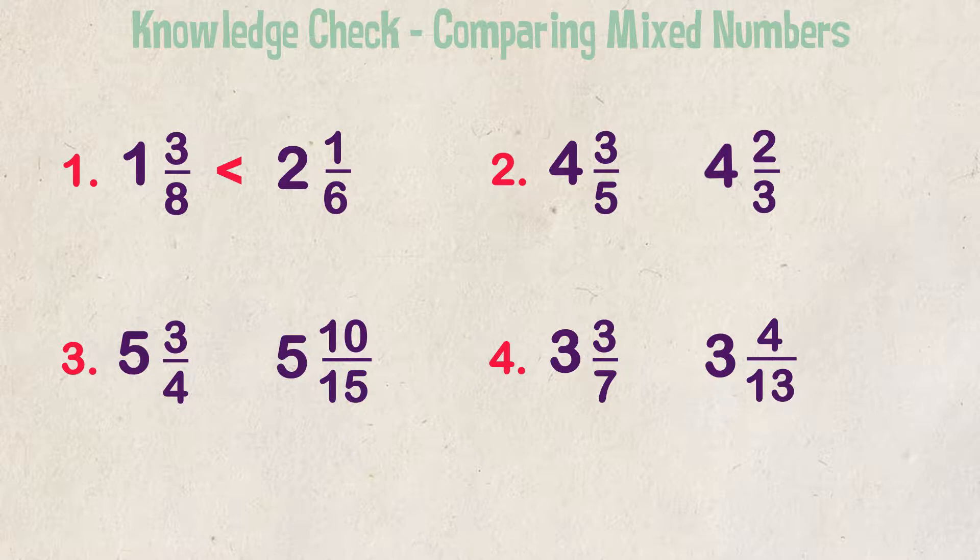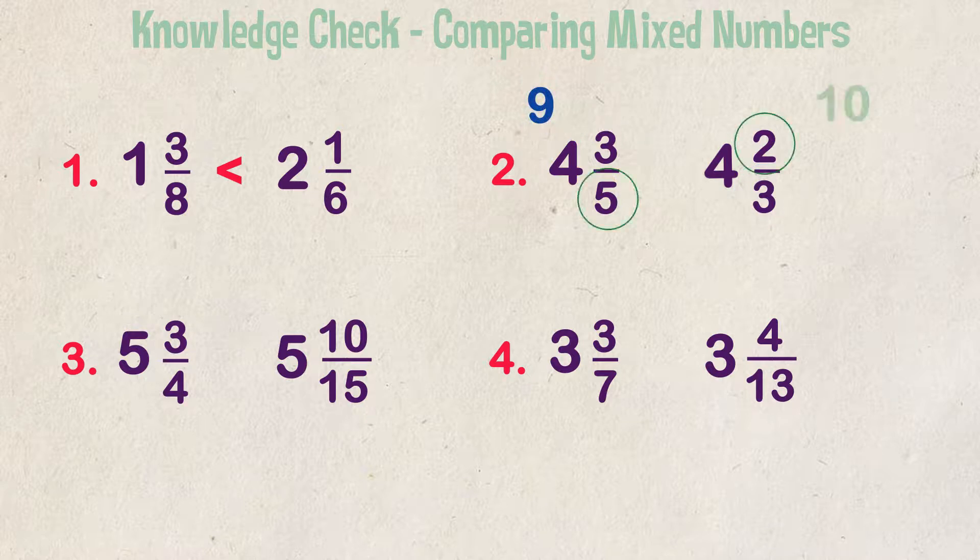Let's look at the mixed numbers now when the whole numbers are exactly equal. Example 2. Compare 4 and 3 fifths to 4 and 2 thirds. We see that our whole numbers are the same, so let's focus on the proper fraction portion. We can cross multiply the proper fraction portions, and that means multiplying 3 times 3, which is 9, and 5 times 2, which is 10. We know that 10 is bigger than 9, so 4 and 2 thirds is greater than 4 and 3 fifths.